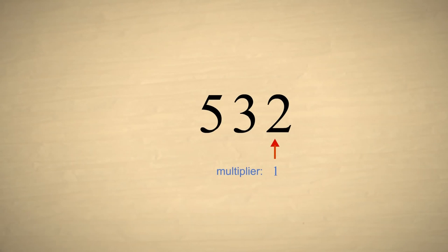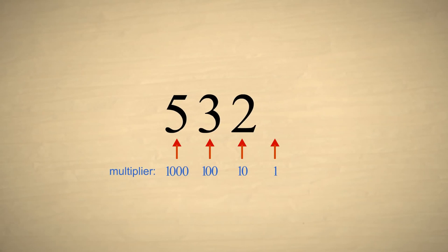Remember that each digit in a decimal number represents a value ten times that of the digit to its right. Now if we take any decimal number and multiply it by ten, each digit is shifted one column to the left.